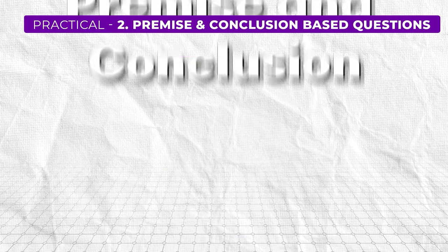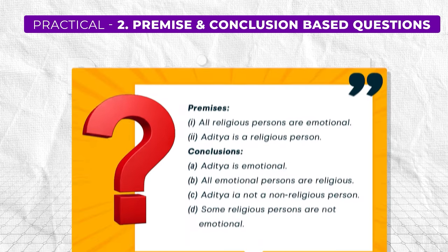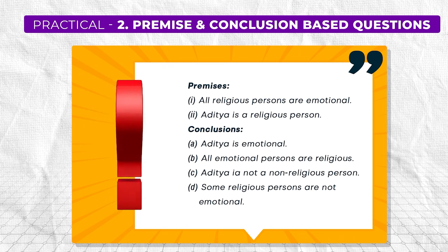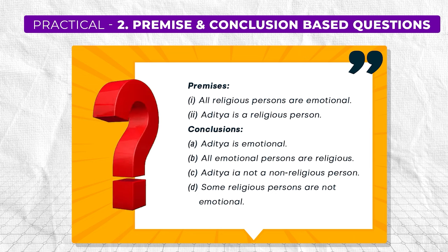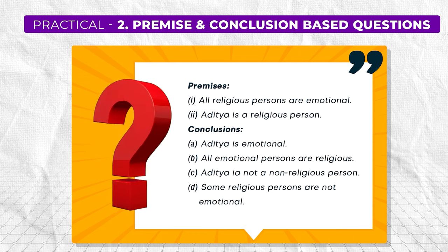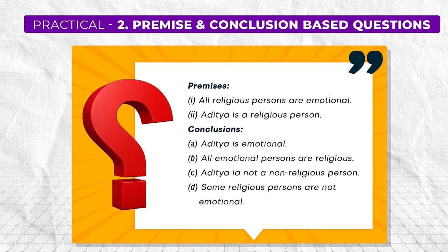The next kind of question is premise and conclusion based questions — very important from a UGC Net Paper 1 perspective. You will be given a premise and a set of conclusions, and you have to construct a Venn diagram to correctly find the conclusion. For example: all religious people are emotional and Aditya is emotional. Using the Venn diagram, if all religious people fall under the emotional set and Aditya is a religious person, then we can conclude that Aditya is emotional.